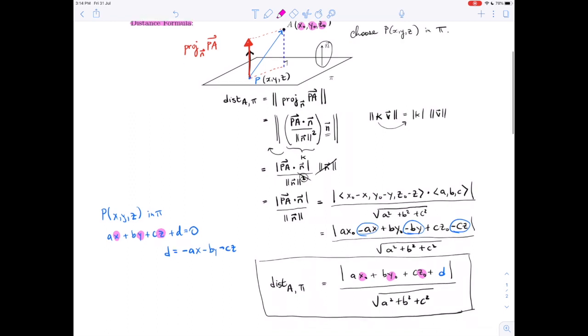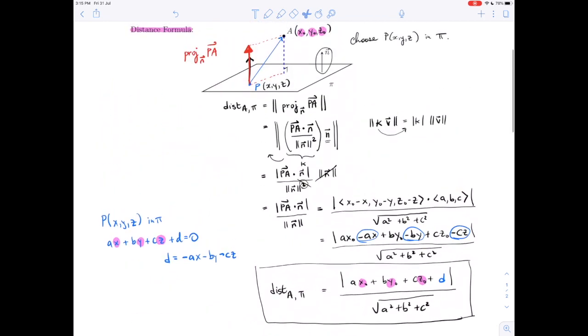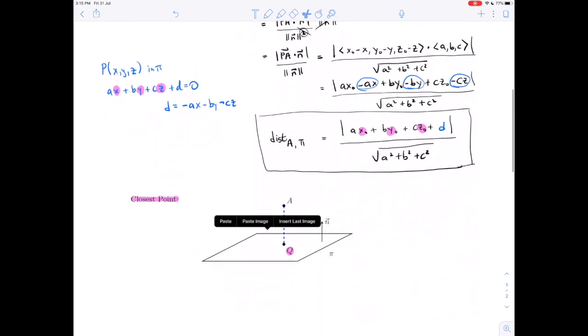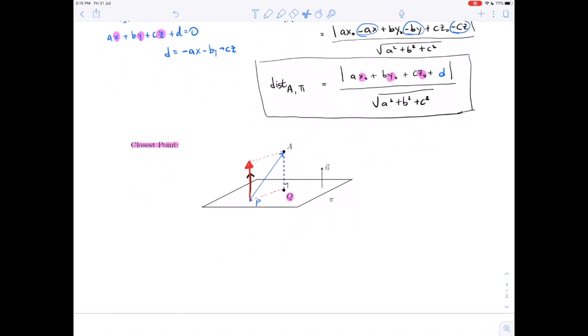Now, closest point. What if we don't want just that distance, but we also want this point Q? We want the point in the plane that is closest to A. Actually, it turns out that what we did above is kind of useful. So let's recopy what we have up here and bring that down here.